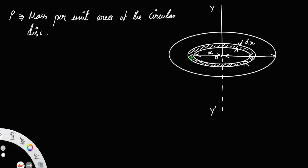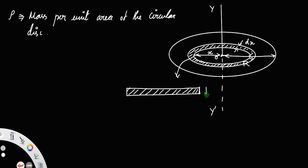If you open this thin strip, you will get a rectangle. Since the thickness dx is very small, the upper and bottom lengths remain the same. The length of the strip will be the perimeter of the circle, and the perimeter of a circle with radius x is equal to 2πx.